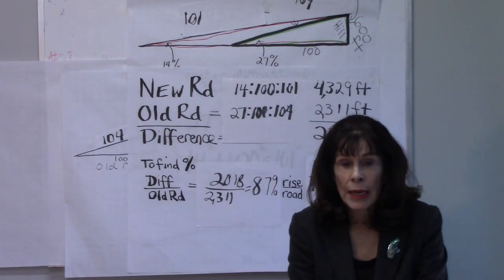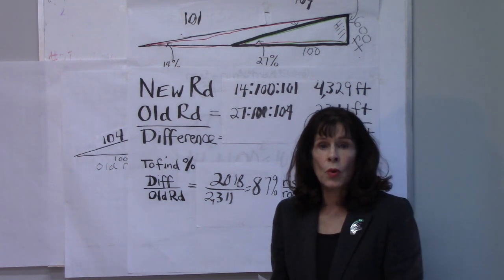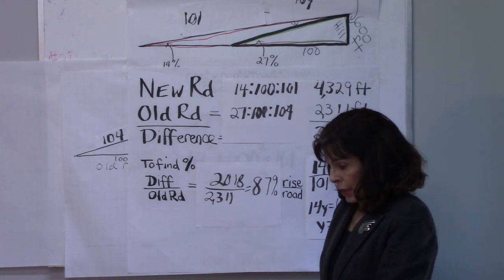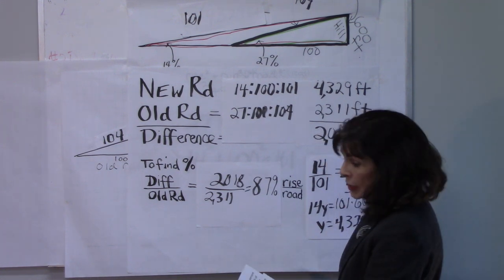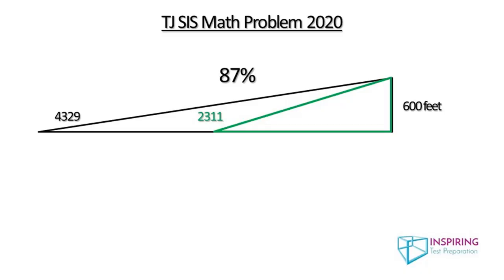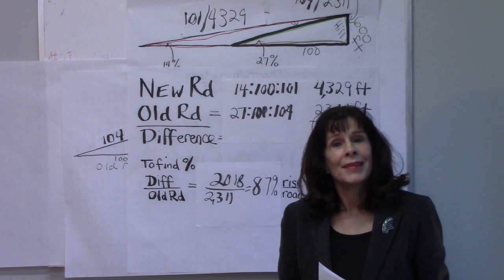So, that is my solution to the 2020 TJ Math SIS problem. And to recap, we've got the new road is 4,329. The old road is 2,311. And the percent difference, the difference between the two roads is 2018. And the percent difference is 87%.